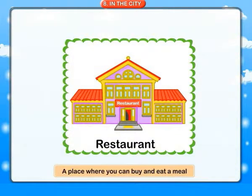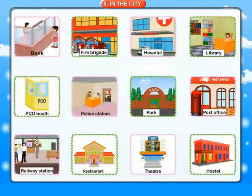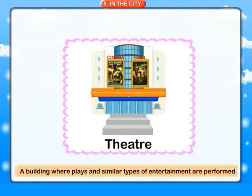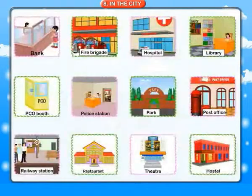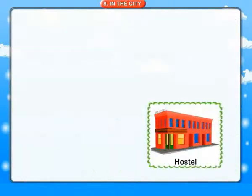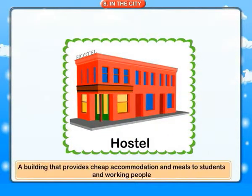Restaurant: a place where you can buy and eat a meal. Theatre: a building where plays and similar types of entertainment are performed. Hostel: a building that provides cheap accommodation and meals to students and working people.